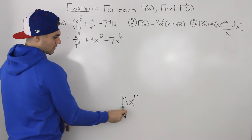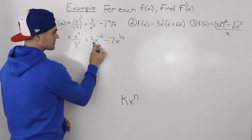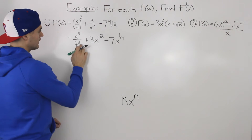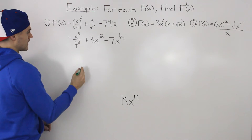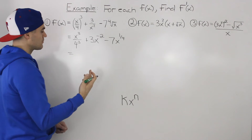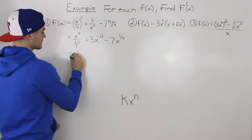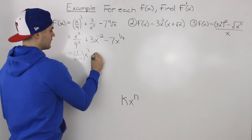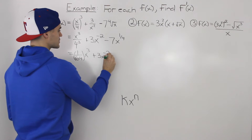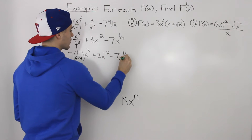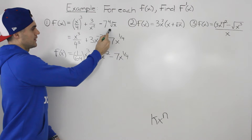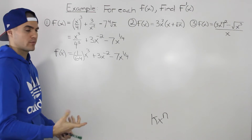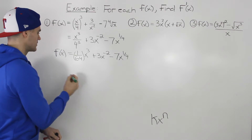These two terms — x to the power of negative 2 and x to the power of 1/4 — are already in the form k·xⁿ. However, the first term is not yet. Since 4 to the power of 3 is 64, we can rewrite it as (1/64)x³. So the full function becomes (1/64)x³ + 3x⁻² - 7x^(1/4). We've algebraically manipulated it to get every term in the standard format, and now we can apply the power rule.